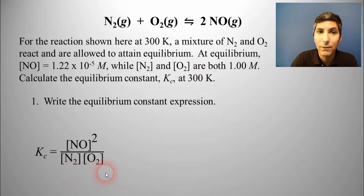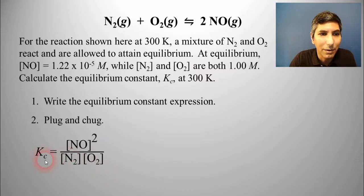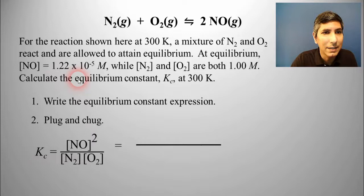Now, once we have that expression written, we can just plug and chug and solve for the Kc. So NO is given to us in the problem as 1.22 times 10 to the negative fifth, and of course we have to square that.